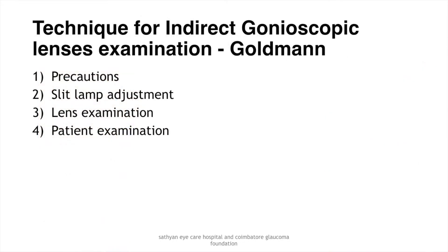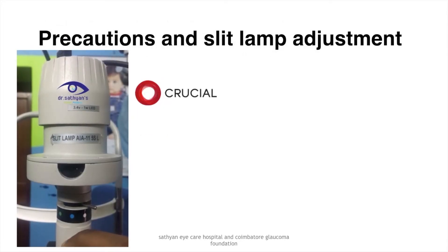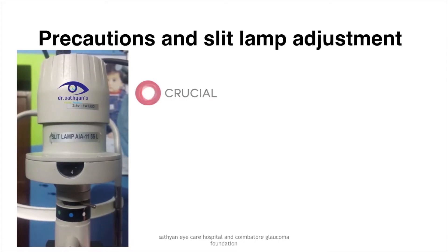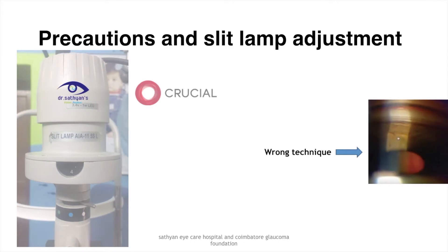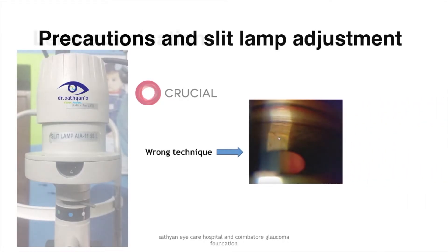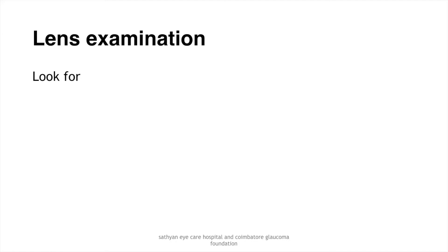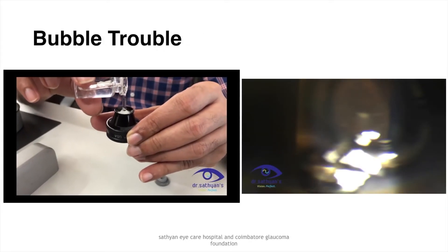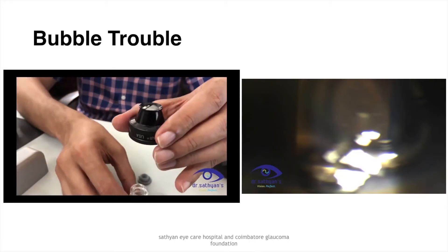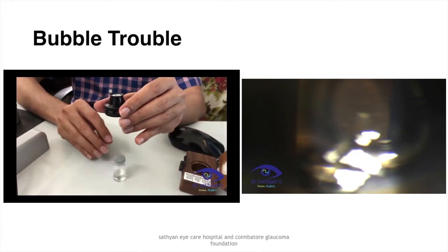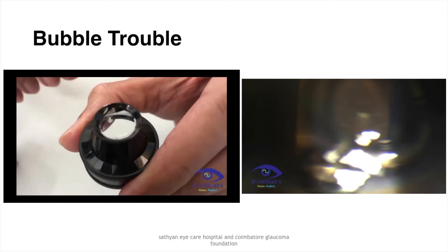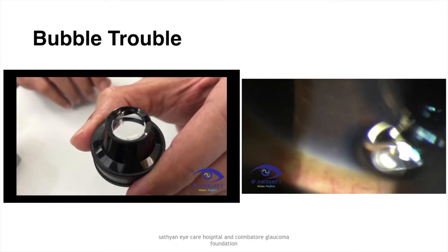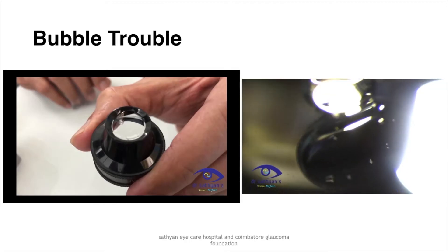The technique of performing a gonioscopic examination starts with precautions. The graticule of the slit lamp has to be reduced to 5 mm or less to prevent light-induced pupillary miosis. During lens examination, look for cracks, bubbles, and tiny oily secretions in the lens, as we don't want bubbles to cause trouble while performing gonioscopy. A small bubble will appear much larger under the slit lamp, obscuring the angle structures.